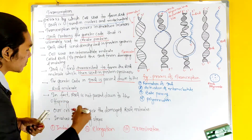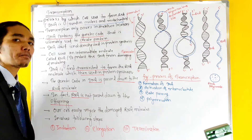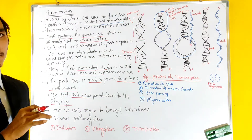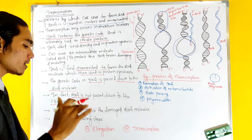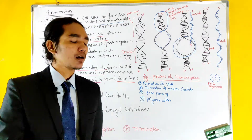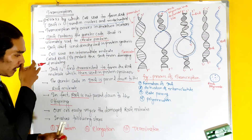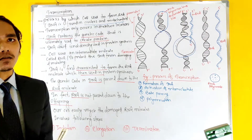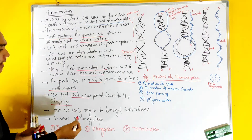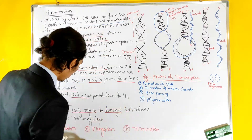RNA is not passed down to the offspring. This is why genetic information is carried to human beings through DNA. In higher organisms, certain viruses and bacteria can also carry genetic information. Our cells easily recycle damaged RNA molecules.